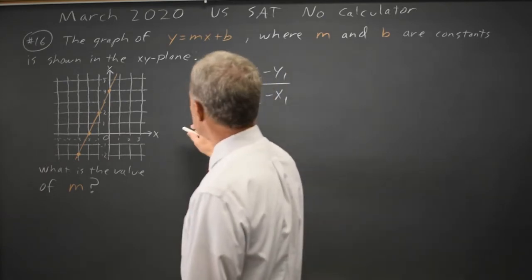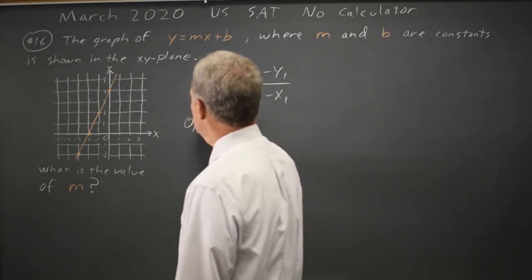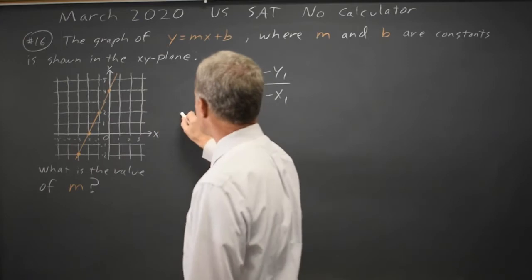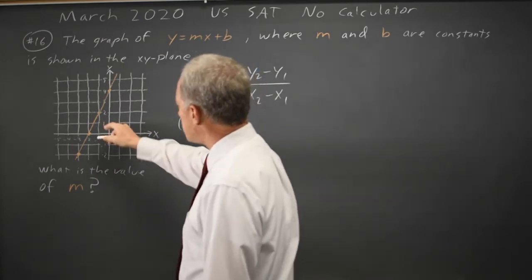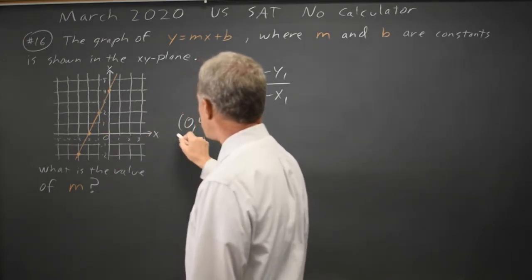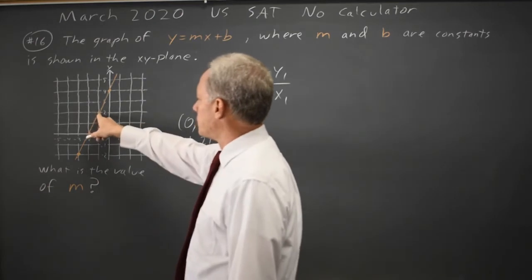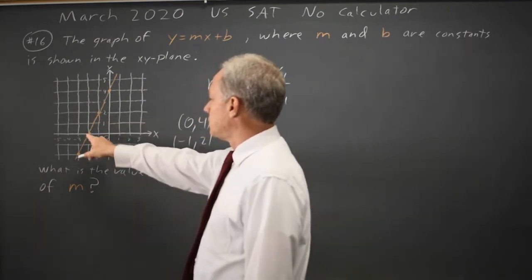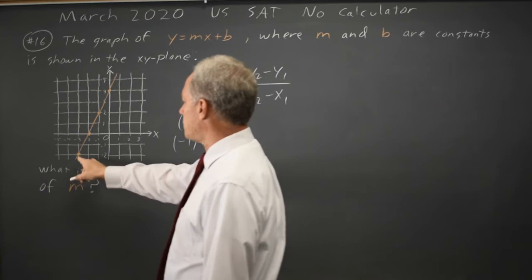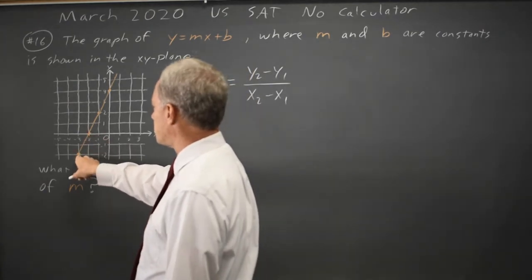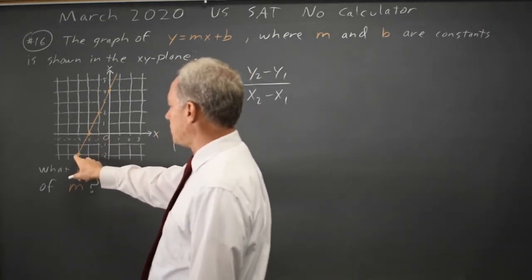...such as when x equals 0, y equals 4, that's this point, and when x equals negative 1, y equals positive 2, the next point indicated, or I could have used negative 2, 4, or negative 2, 0, or negative 3, negative 2.